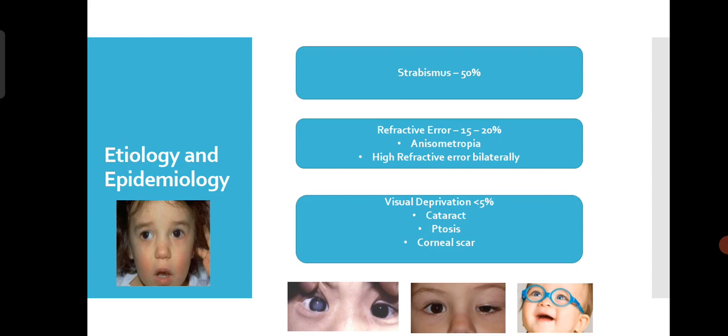Also, if the child has anisometropia — meaning one eye has a very high refractive error and the other is almost zero — for example, zero refractive error in the right eye and minus 7 in the left eye, the minus 7 eye will see almost nothing, just very blurred images. The brain will suppress that high refractive error eye and slowly it will become Amblyopic. This is anisometropia.